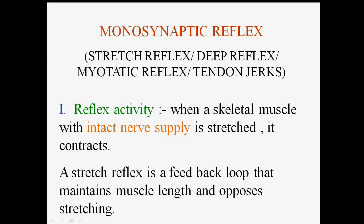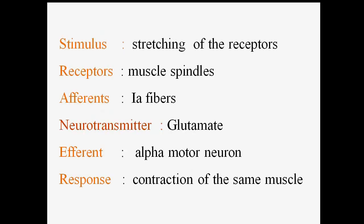The monosynaptic reflex: when a skeletal muscle with intact nerve supply is stretched, it contracts. This stretch reflex is a feedback loop that maintains muscle length and opposes stretching. It is also known as the stretch reflex, deep reflex, myotactic reflex, or tendon jerk. The stimulus is stretching of the receptors — the muscle spindles. The afferents are Ia fibers.